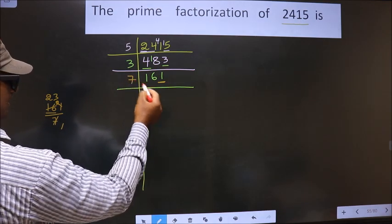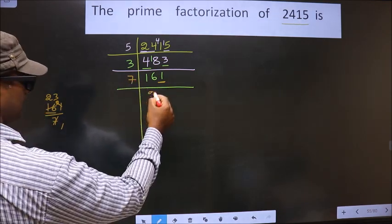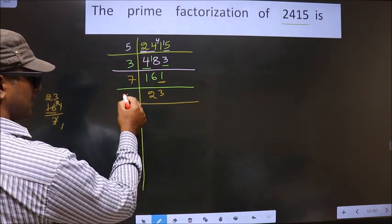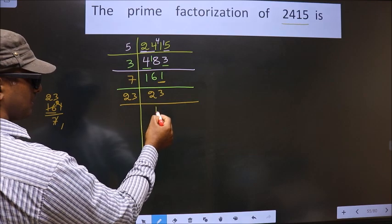So we take 7 here and here we get 23. Now 23 is a prime number, so we take 23 once.